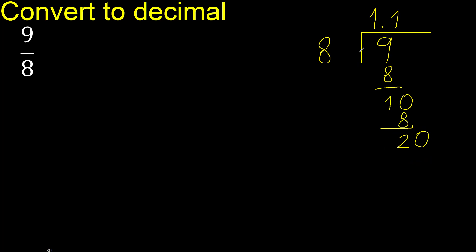20. 8 multiplied by 3 is 24, excessive. Multiply by 2 is 16, subtract is 4.